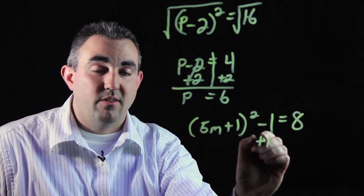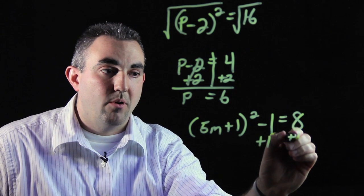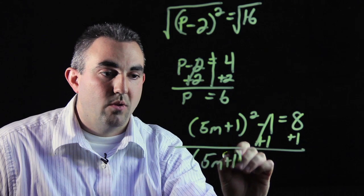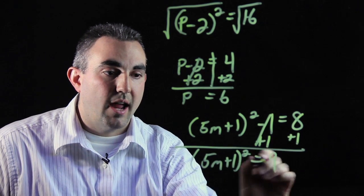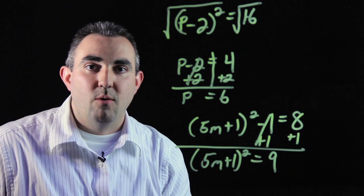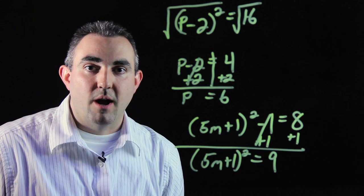By doing that, inverse operation, we add 1 on both sides of our equation and we are left with 5m plus 1 squared equals 9. Now we have a perfect square on our left, we have a perfect square on our right, and we are ready for the square root property.